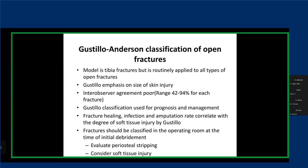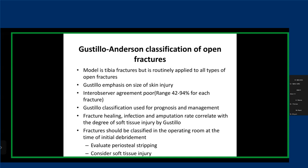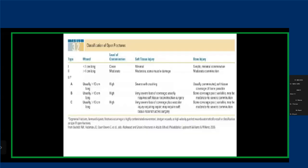Fracture healing, infection, and amputation rates correlate to the degree of soft tissue injury by Gustilo-Anderson — so it has prognostic implications. We don't definitively classify a fracture using Gustilo-Anderson until we have the patient in the OR and have done our first debridement. There are broadly three grades, with Gustilo-Anderson grade three further classified into A, B, and C. This classification is based on the size of the wound, the level of contamination, the extent of soft tissue injury, and the extent of bone injury. Infection rates range from 2% in grade one to 50% in grade 3C with vascular injury.